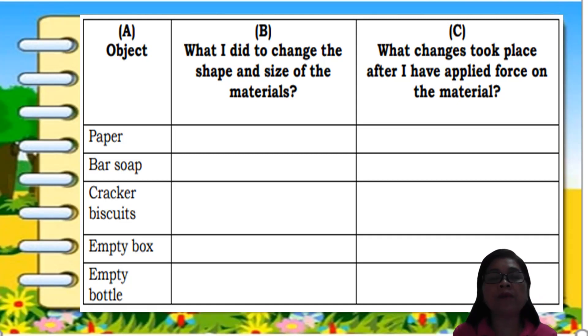For example, paper. Anong gawin mo sa papel para maiba ang kanyang hugis at kanyang laki? Marami kayong pwedeng gawin sa papel, di ba? Then here you write the changes. So ano yung nakikita mong kaibahan matapos mong gawin sa papel? Next object, bar soap. So think of something you can do to a bar soap to change the shape and size of it. Write also the changes. Cracker biscuits. Anong gagawin mo sa biscuits para maiba ang kanyang shape at size? Empty box. Anong gagawin mo rito para maiba rin ang kanyang size and shape? So with the empty bottle.